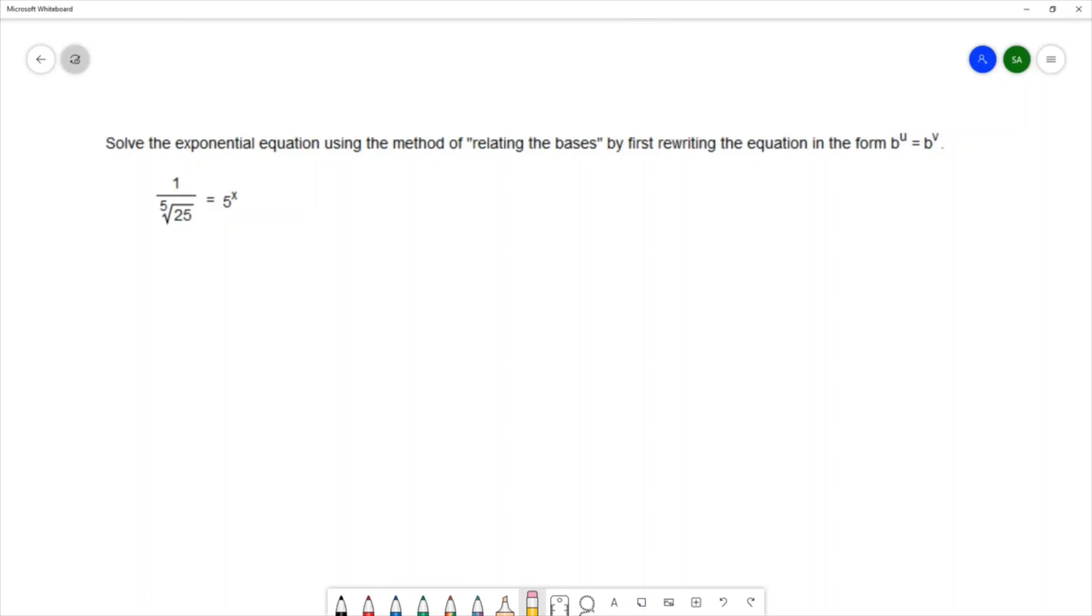The equation that we're working with is 1 over the 5th root of 25 equals 5 to the x. I want to start off by writing the equation to have the same base on both sides.